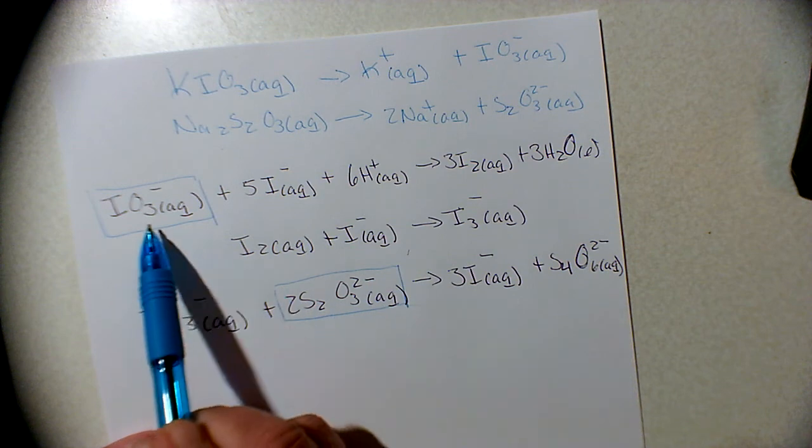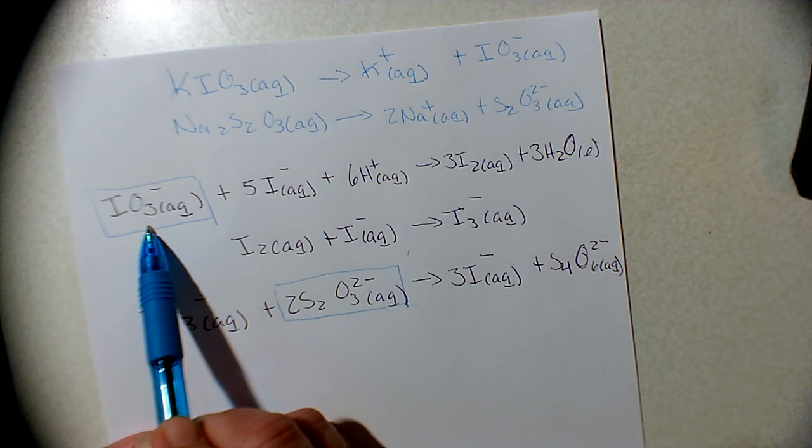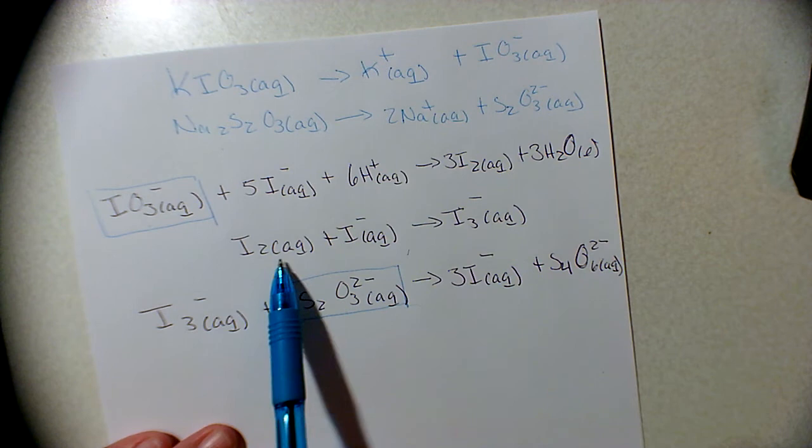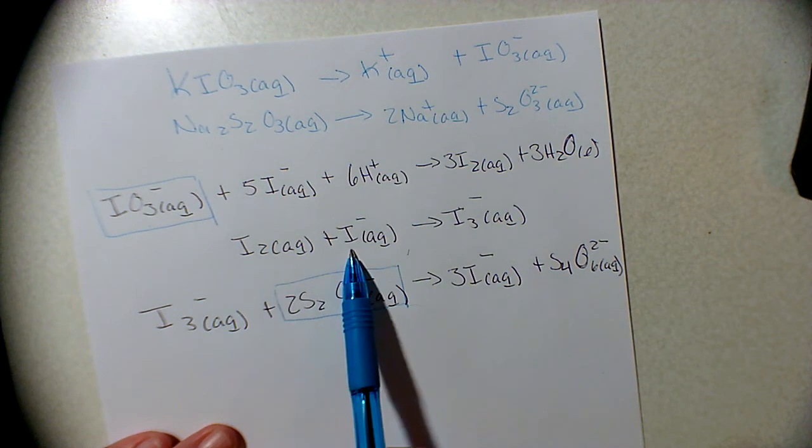We have our potassium iodate ion, or the iodate ion, and we look to what we get out of there and we get our iodine and our water. Down here we have iodine and an iodide ion.